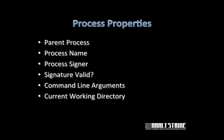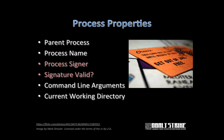Here are some of the observable process properties: the parent process, the process name, whether or not it's signed and whether that signature is valid, the command line arguments, current working directory, and other properties. These properties are all fair game to identify malicious from non-malicious activity. One place you'll often see that is when a process might be signed by a very high trust entity like Microsoft — in some cases programs get a free pass from security products to further avoid false positives.